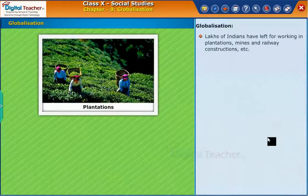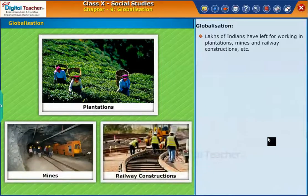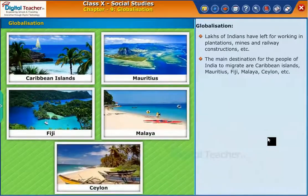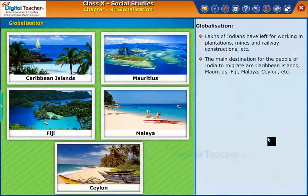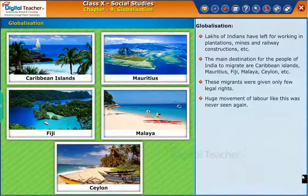Lakhs of Indians have left for working in plantations, mines, and railway constructions, etc. The main destinations for people of India to migrate are Caribbean islands, Mauritius, Fiji, Malaya, Ceylon, etc. These migrants were given only few legal rights. Such a huge movement of labor was never seen again.